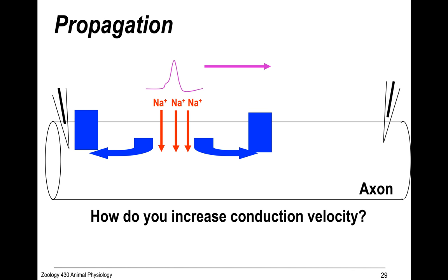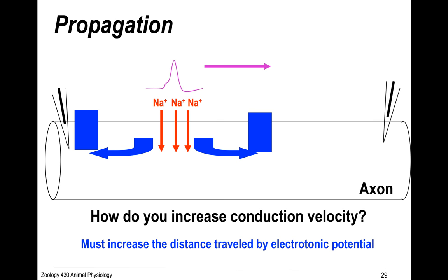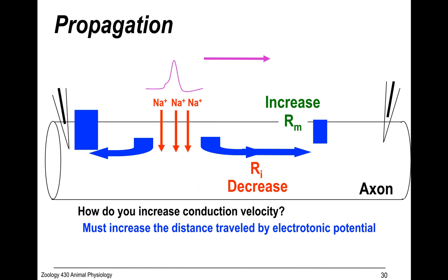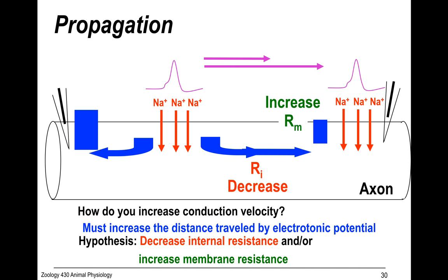How do you increase the conduction velocity of an action potential? You have to increase the distance traveled by the electrotonic potential. You can decrease internal resistance or increase the membrane resistance. With each action potential, it'll travel farther before it starts another action potential. Our hypothesis is that we can increase conduction velocity by decreasing internal resistance and/or increasing membrane resistance.